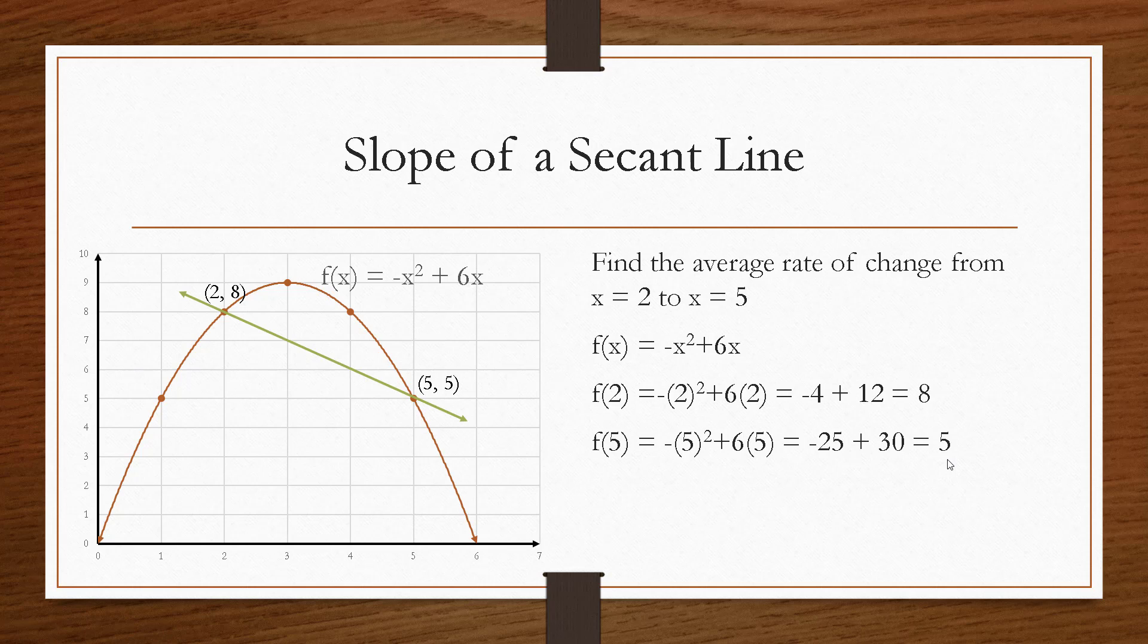Now we can just find the slope by doing the change in y over change in x. Now if we look here, 5 minus 8 is negative 3, so the change in y is negative 3, and the change in x is positive 3. So our slope would be negative 3 over 3, or negative 1. And if we look at our graph, that makes sense, because when y goes down by 1, x goes right by 1. Down 1, right 1. So our slope is indeed negative 1.